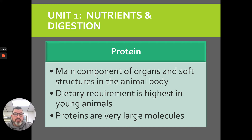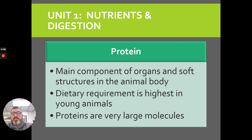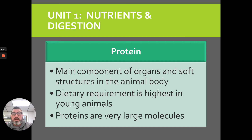Protein is the main component of organs and soft tissue structures in the body. The dietary requirement is really high in young animals, so in young stock rations, protein needs will be pretty high. As those animals mature and get older, protein dietary needs drop. We will try to match that drop in the diet in order to save cost and make sure they're performing at their optimum productivity.